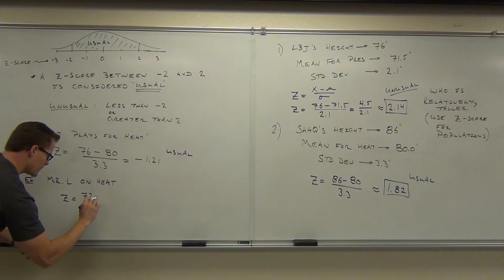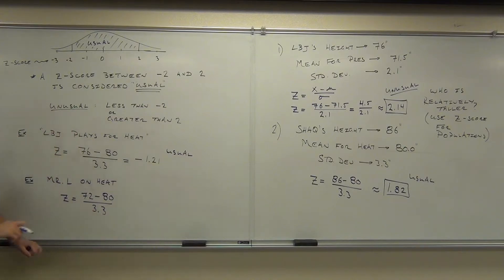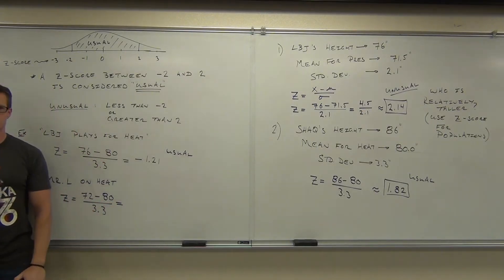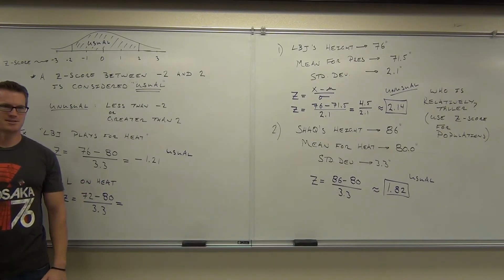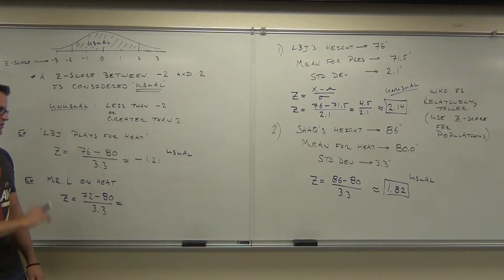So 72 minus the, what is it, 80? Over 3.3. Do you suppose this is going to come up positive or negative? I'm less than the average. I hate being below average. But yeah, I'm less than the average height, so I'm going to be a negative z-score here.